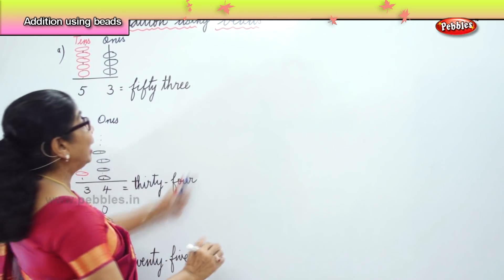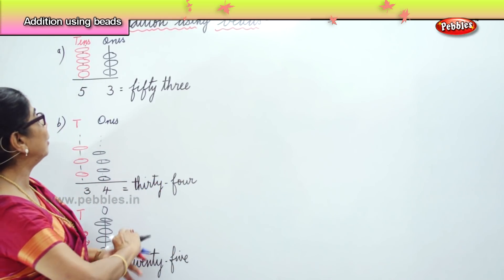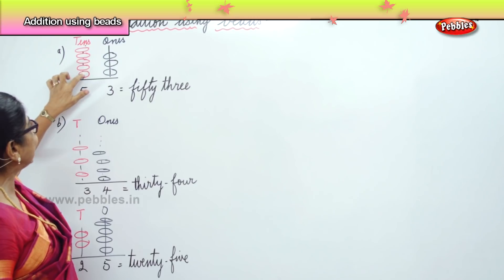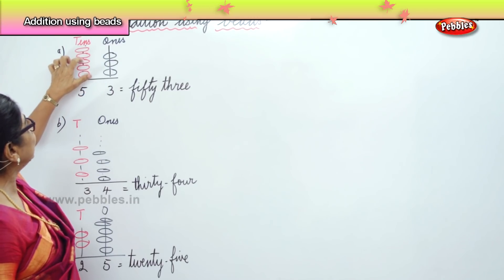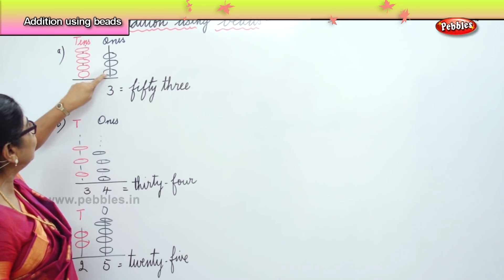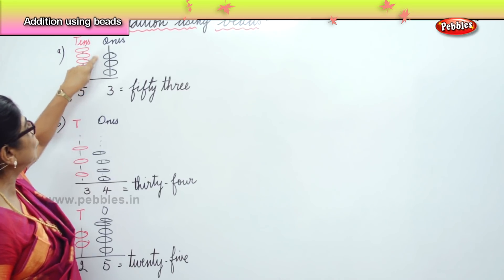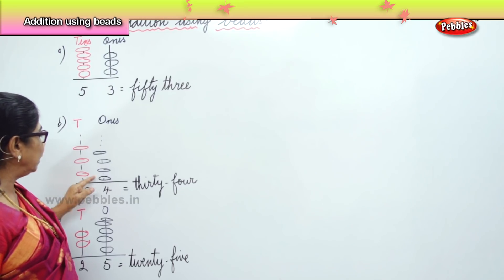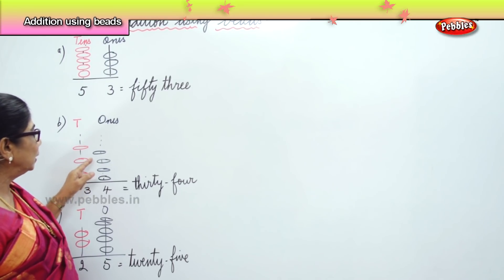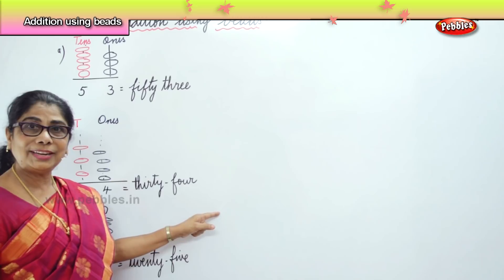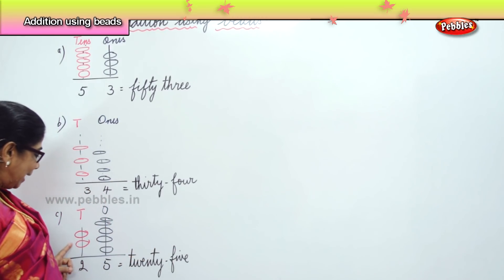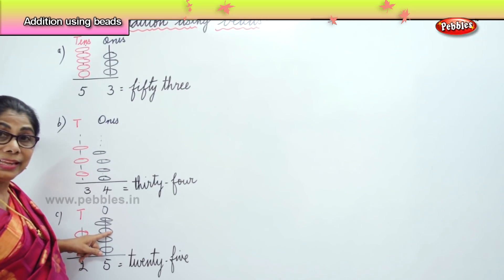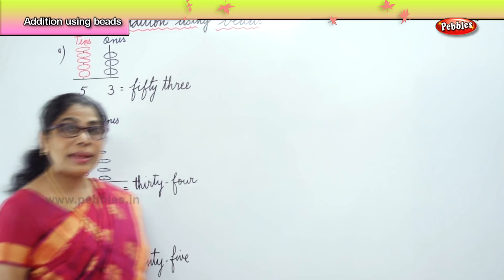See how we are doing addition using beads. Let's count again. Here you have 53: 10, 20, 30, 40, 50, 51, 52, 53. You see that? 10, 20, 30, 31, 32, 33, 34. See you got 34 here. Now, 10, 20, 21, 22, 23, 24, and 25.